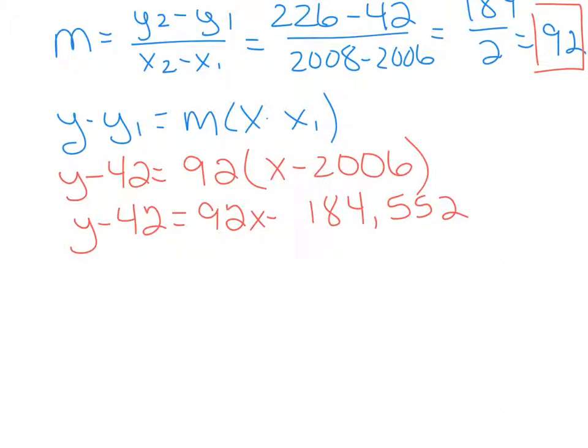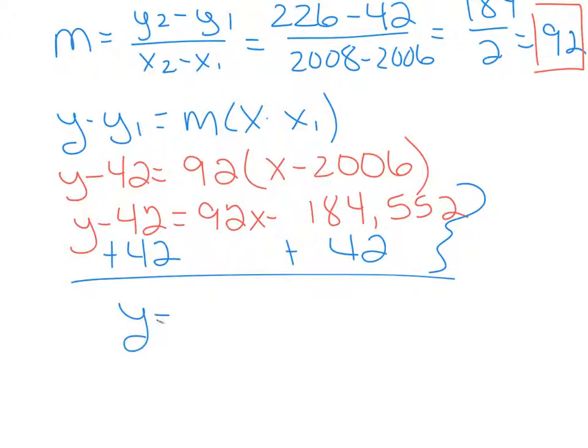The next step is to add this 42 to isolate y. And these are the like terms over here. So we end up with y equals 92x. You've got to be careful with this. These are different signs. So you actually have to subtract the 42 from this, and we're going to keep the sign of the bigger one, which will be the negative sign. So it's 184,510. And this is the equation of the line.